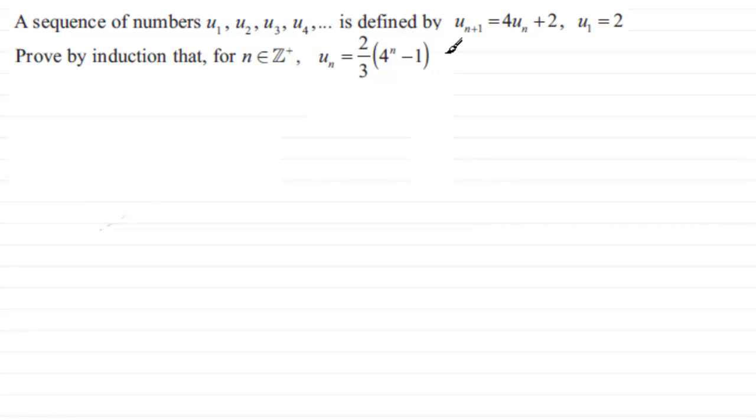So, how do we do this? Well, first of all, we prove that it's true for n equals 1. So when n equals 1, that will be our starting point, what do we have? Well we have here that u_1 would be equal to 2/3 multiplied by 4 to the power 1 minus 1. Well, 4 to the power 1 is obviously 4. 4 take away 1 is 3. 2/3 of 3 leaves us with 2.